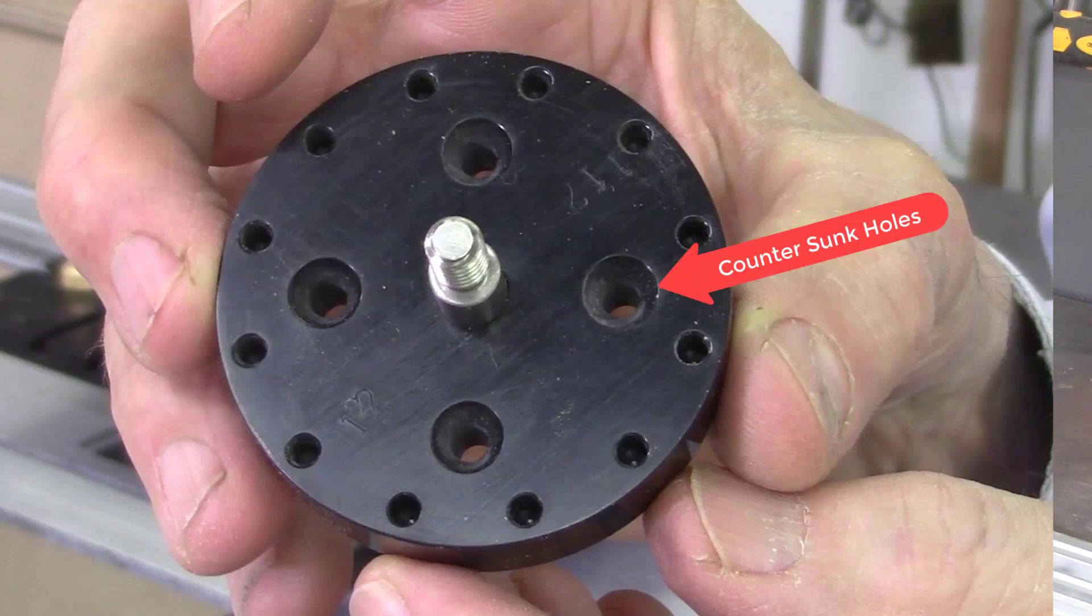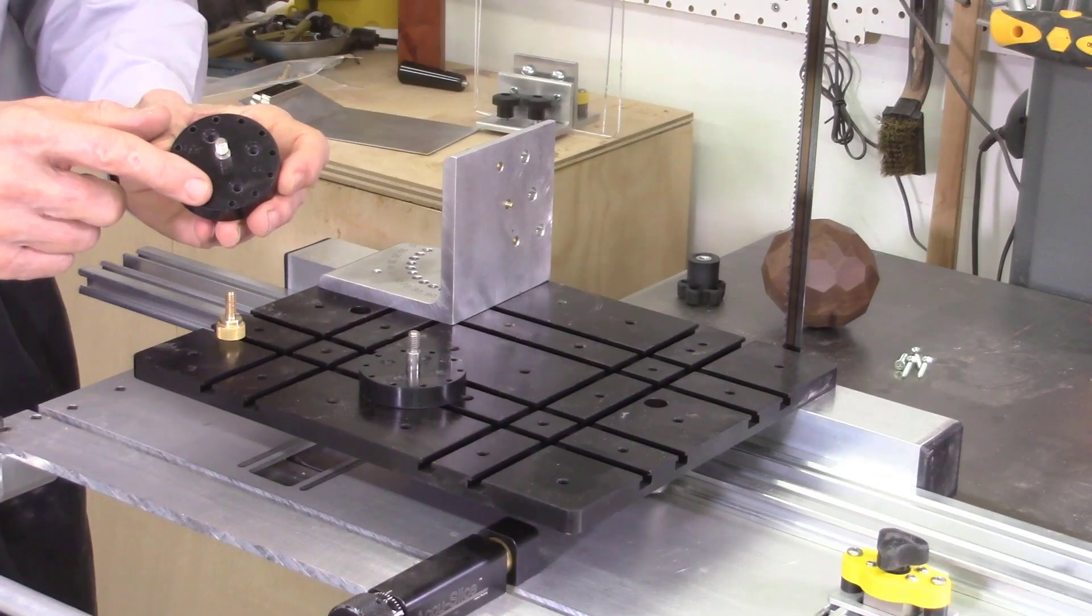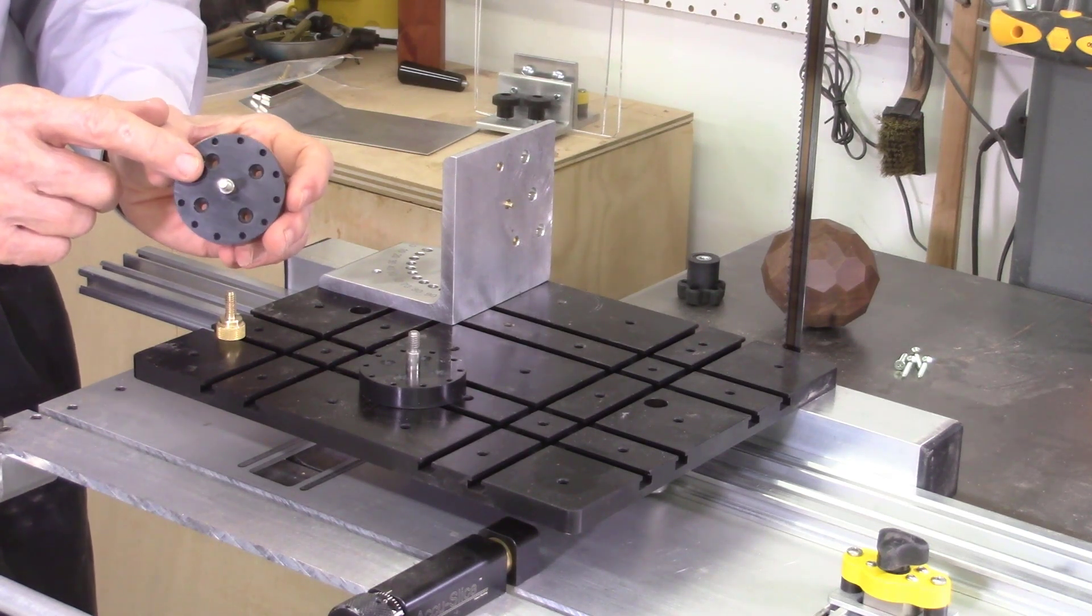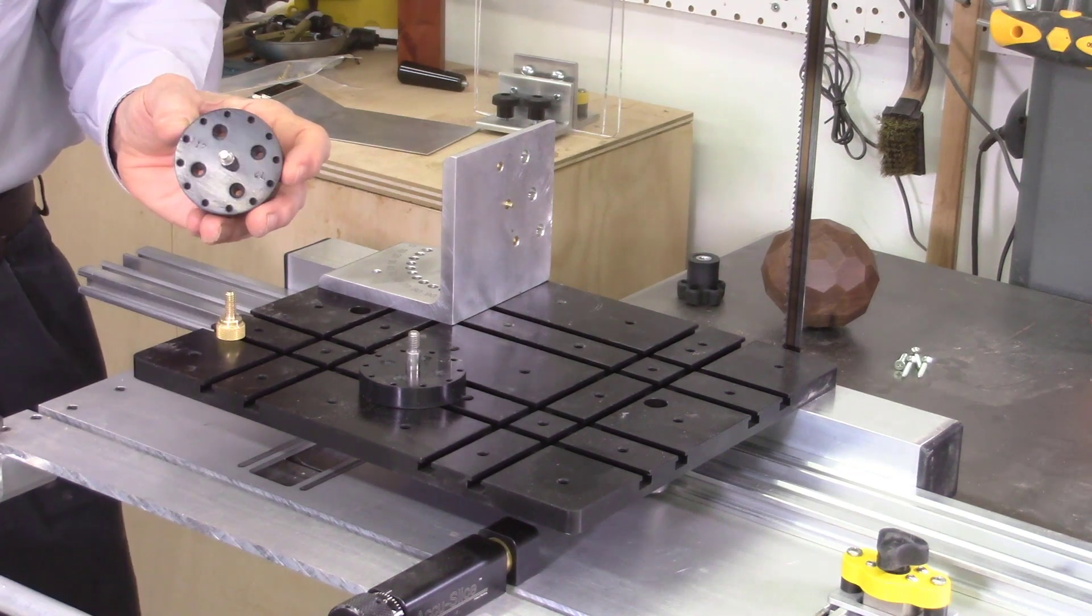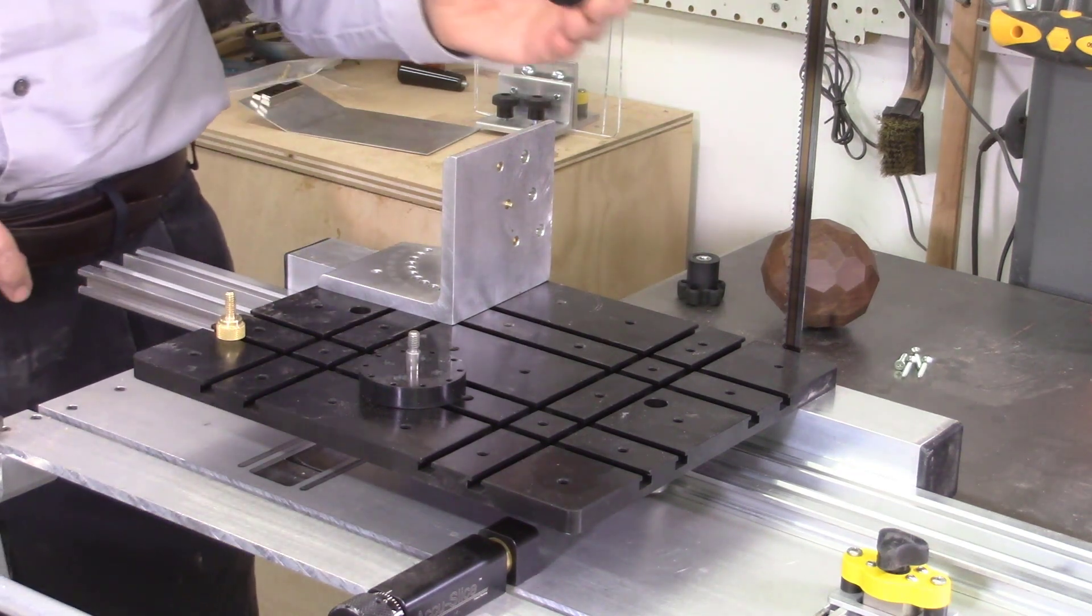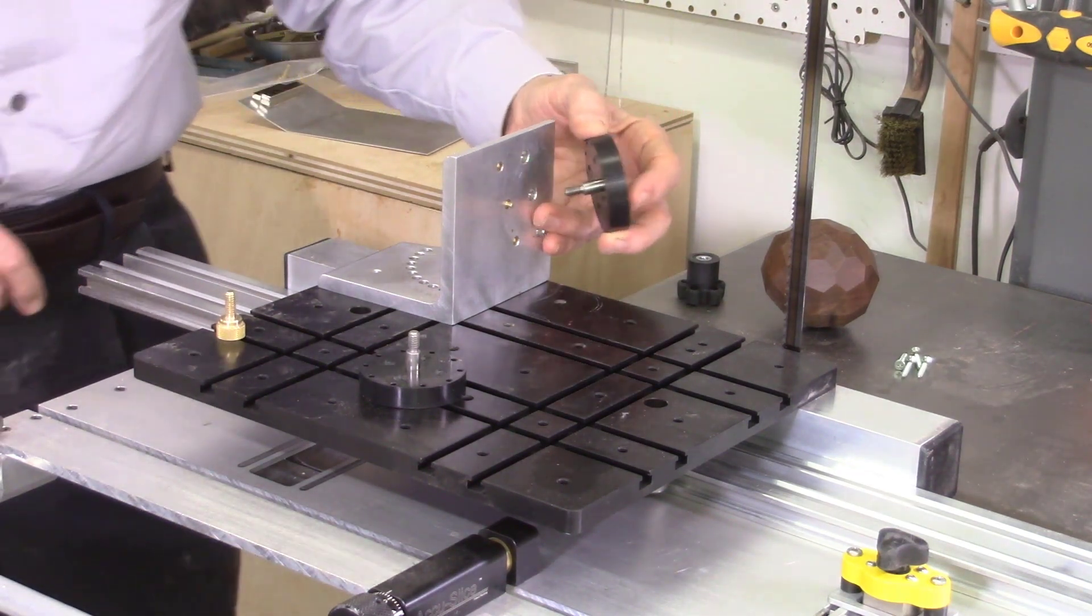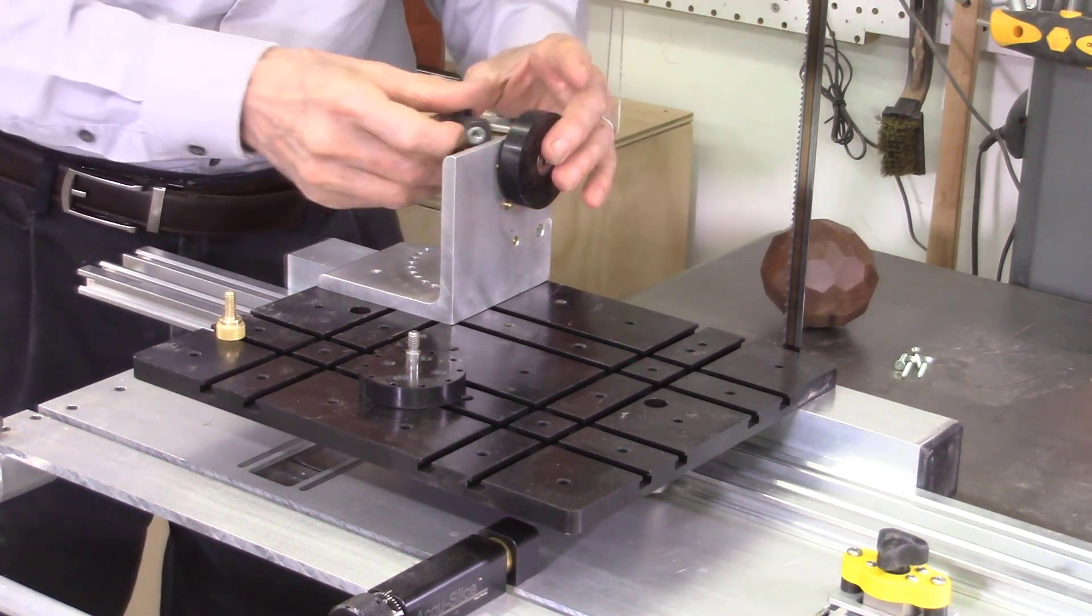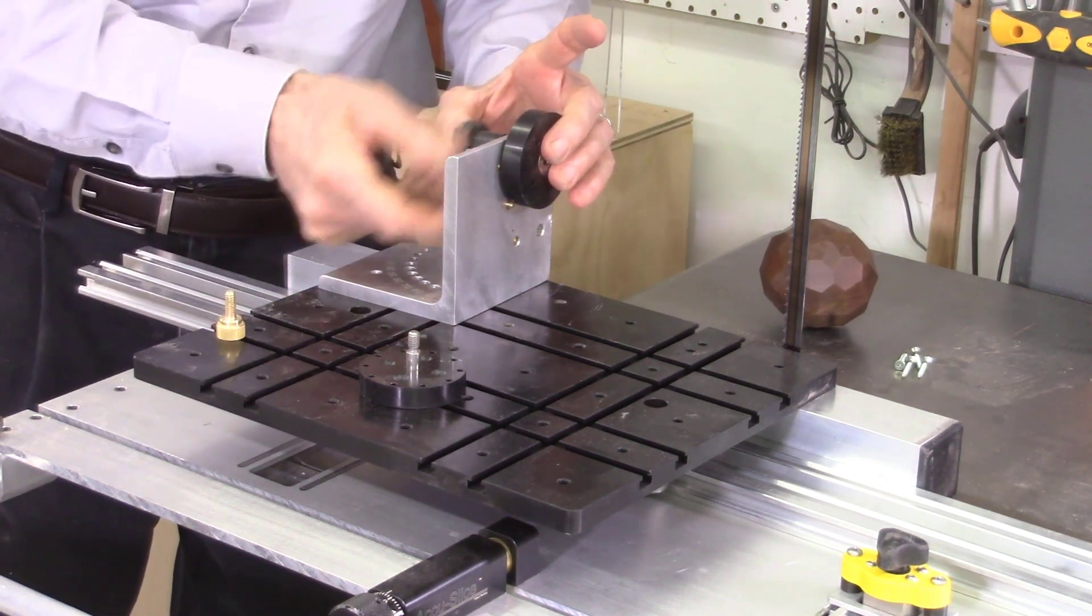Also on the pattern discs are a set of four countersunk holes which can be used to attach the wood blocks to the pattern disc. The four number 6 wood screws included in the mounting hardware package are used to attach the wood blanks to the pattern disc. You can also use double-sided tape, but my preference is to use the screws since they hold the wood much more securely. The pattern disc with a shoulder bolt is inserted into the large hole on the L-bracket support plate and is secured with the large black thumb screw.